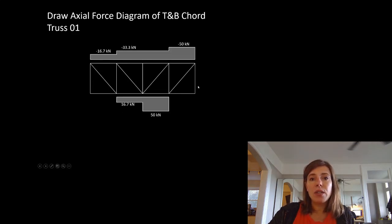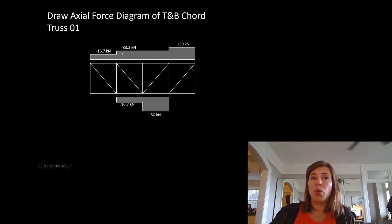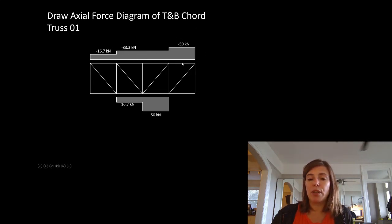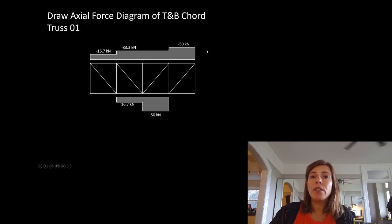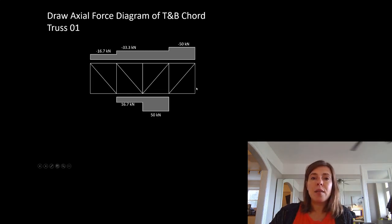Let's draw the axial force diagram for the top and bottom chords of the truss we calculated. We had found that two chords had zero axial force, two had 16.7 and 50 kilonewtons of axial force in tension, 16.7 kilonewtons of compression in one member, two members with 33.3 kilonewtons of compression, and one member with 50 kilonewtons of compression. If making all top chord members the same size, the governing load is 50 kilonewtons compression — we must have a member with reduced capacity greater than the factored 50 kilonewtons. This graphic really helps us see that quickly.